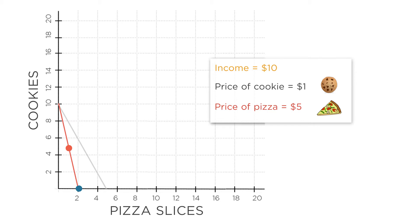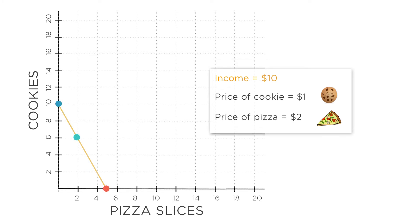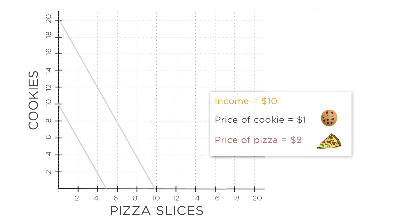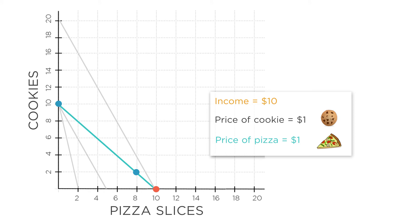To summarize: the budget constraint shows all the bundles of goods you can afford to buy. If your income goes up or down, the entire budget constraint shifts outward or inward. If the price of a good goes up, the budget constraint rotates inward, since you can afford less. And if the price goes down, the budget constraint rotates outwards, because you can afford more than before.